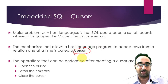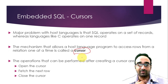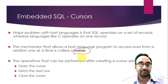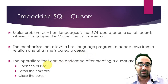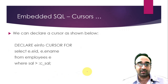To tackle the problem of two-dimensional versus one-dimensional data, there is a concept called a cursor. What the cursor does is form a channel to the database table and retrieve data row by row. To use a cursor in your program, you first have to create the cursor, then perform three operations: open the cursor, fetch the data row by row, and finally close the cursor.